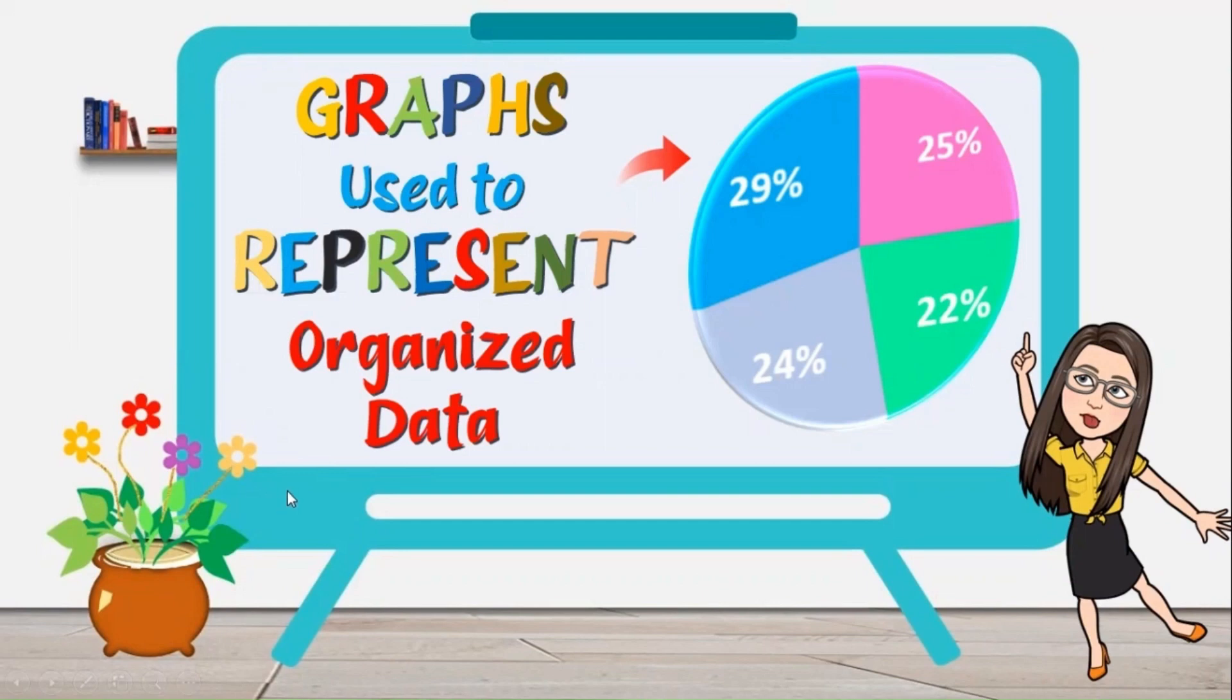Graphs are used to represent organized data. After organizing data in a frequency distribution, we need to present the data in a more comprehensive manner. Here are some of the most used types of graphs to represent organized data.